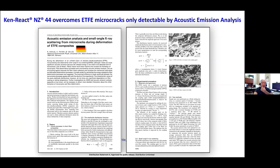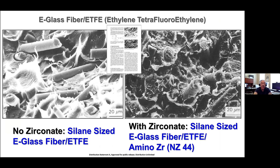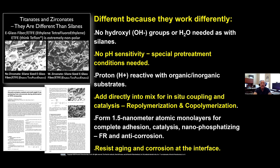Adhesion of fluoropolymers to the glass interface has always been a problem. The University of Ulm did a study on acoustic emission analysis and showed that normal E-glass, silane-sized glass, does not work well with non-polar polymers, but by adding the aliphatic amino zirconate they get excellent adhesion. The functionalities of the difference between silanes and titanates/zirconates: no hydroxyl groups needed, not pH sensitive, proton reactive, you can add it directly into a mix, you can do in-situ coupling, no pre-treatment required, and you form nano atomic monolayers for complete adhesion.